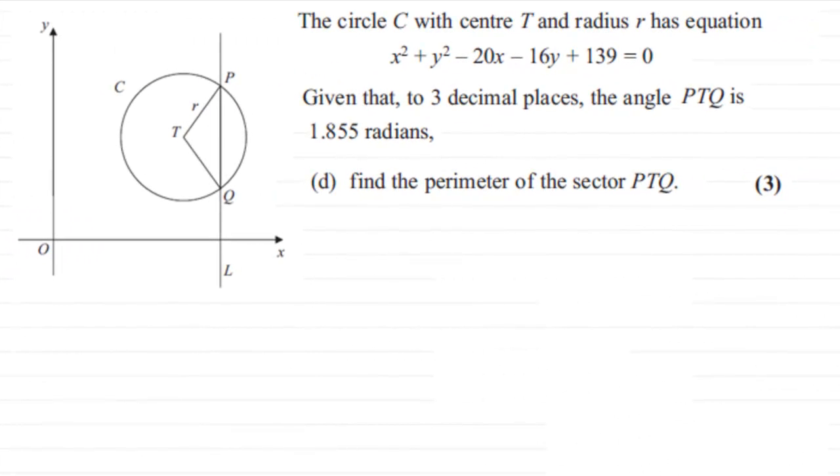Now this last part of the question is all about finding the perimeter of this sector of the circle. We've been given, to three decimal places, the angle PTQ is 1.855 radians—in other words, this angle.